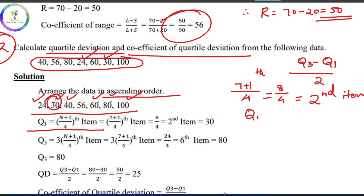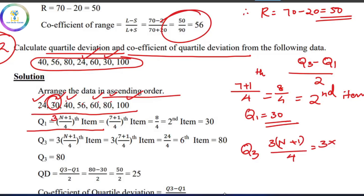So Q1 is found using the formula: n plus 1 by 4th item. So 3 into n plus 1 is 8. So 3 into 8 by 4 is 24 by 4, which equals 6. So we take the 6th item.